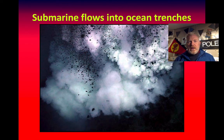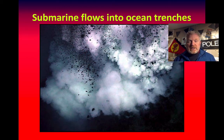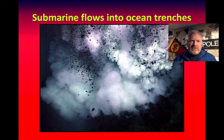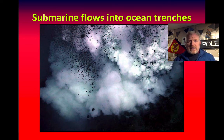We also have submarine flows into ocean trenches — these are like underwater rock avalanches going down into the deepest part of the ocean. They are very fast, very powerful flows of water and sediment, and are catastrophic. We see the effects of deposition of these, for example, in mid-Wales, where a lot of the rocks were laid down as these submarine avalanches.